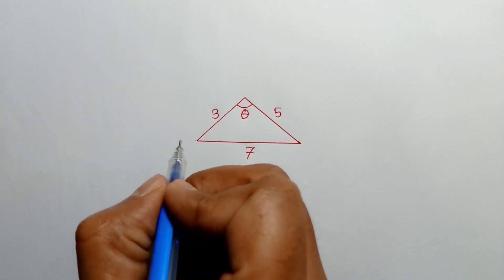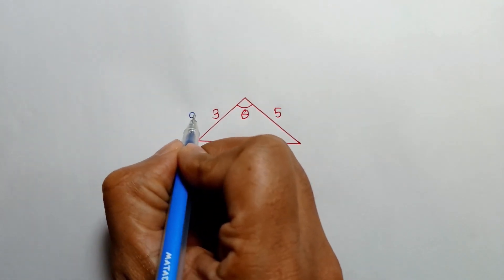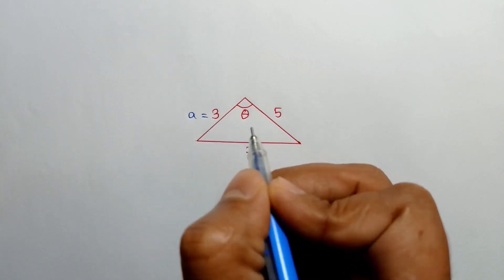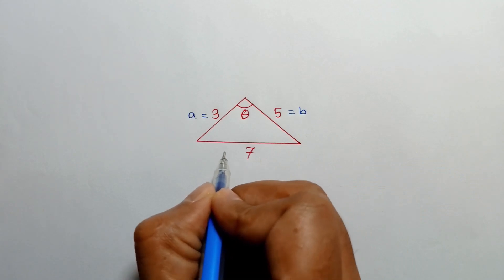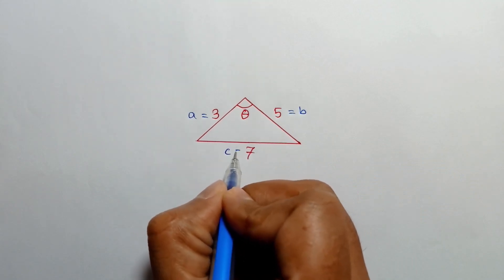Let's consider this side as A and this side as B and this side as C.